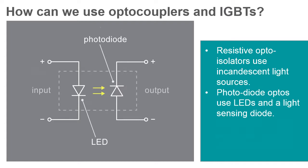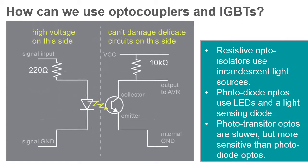There are also phototransistor optoisolators, which although slower than photodiode types, are still common in power supply and signal switching applications.